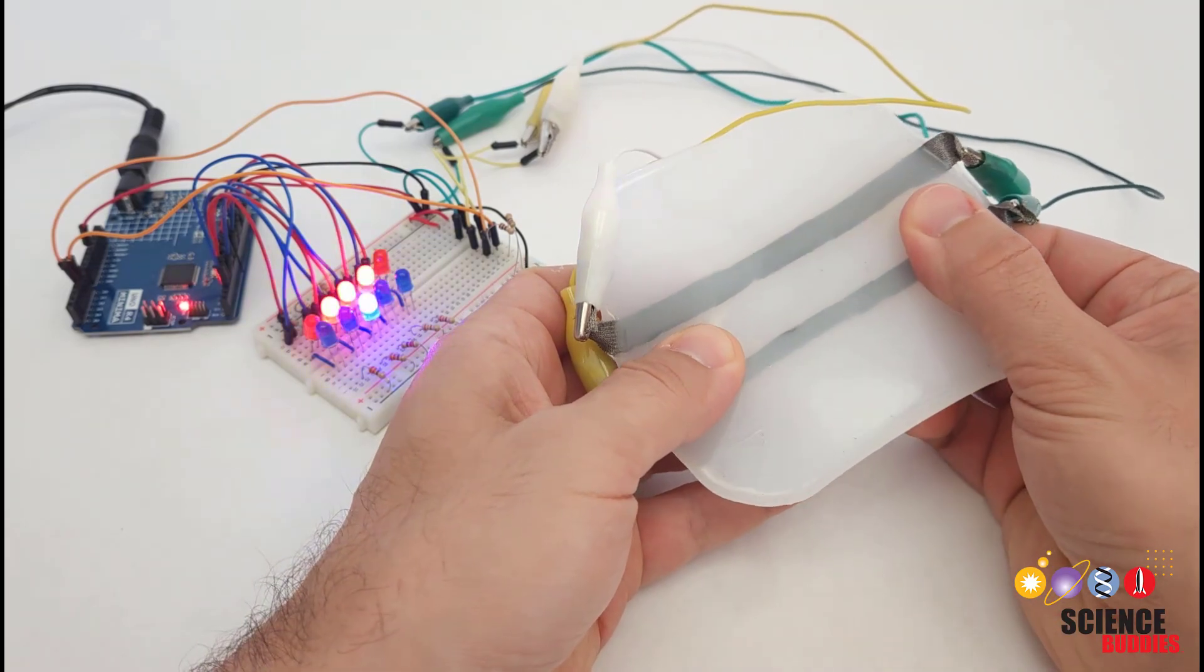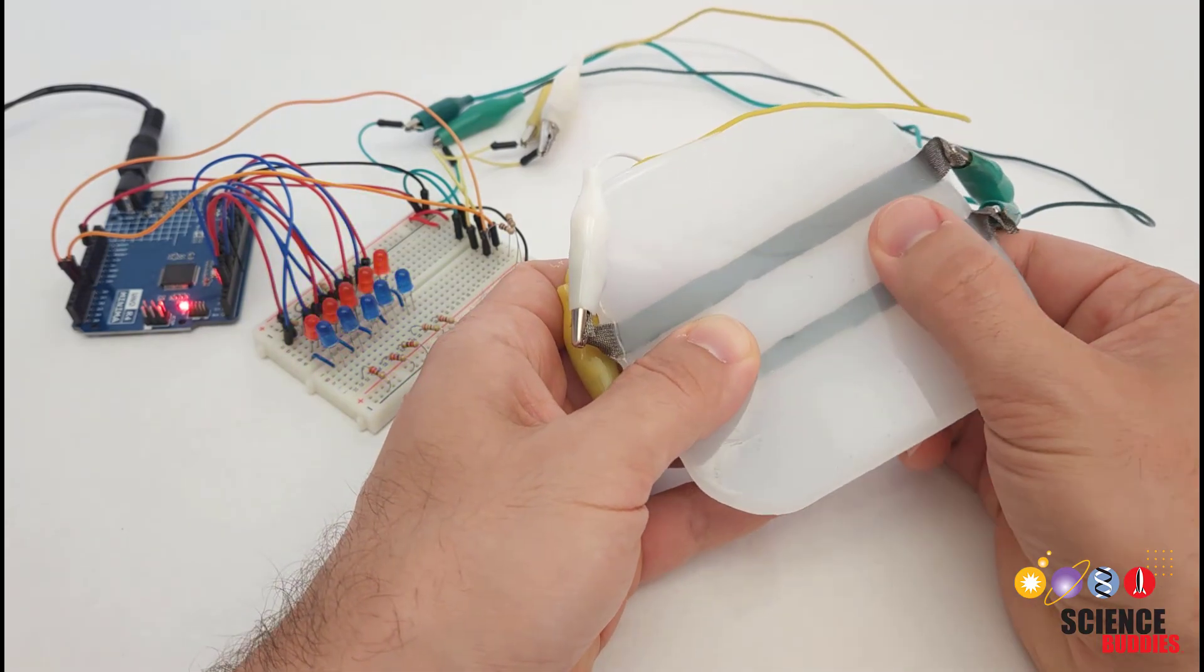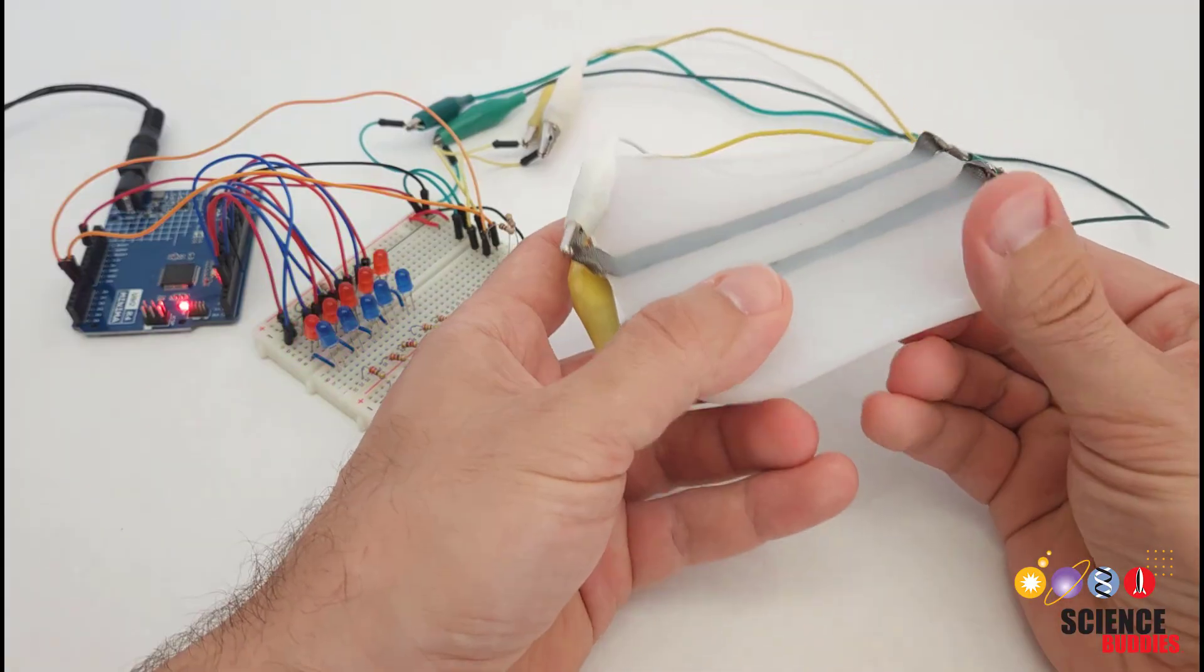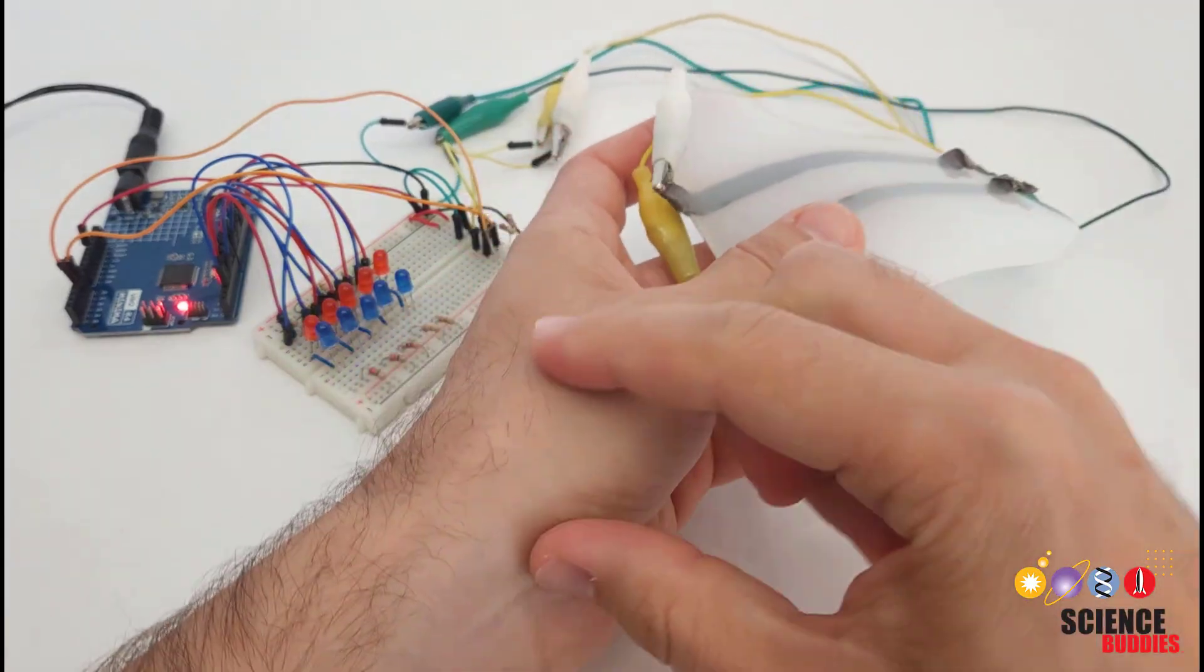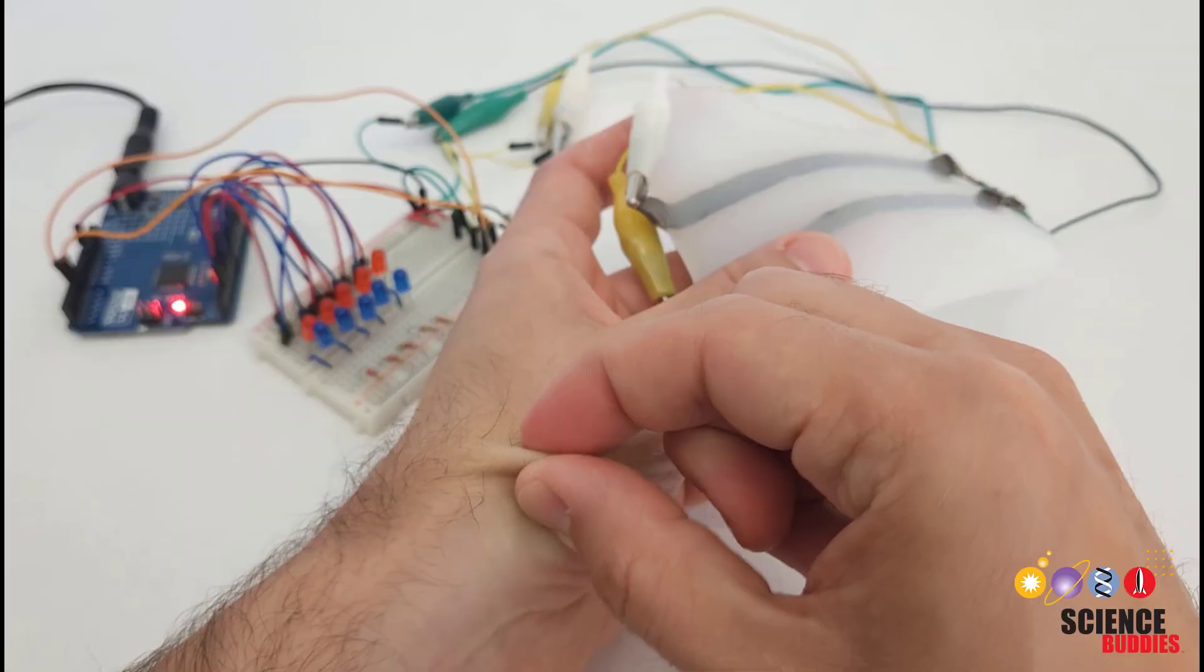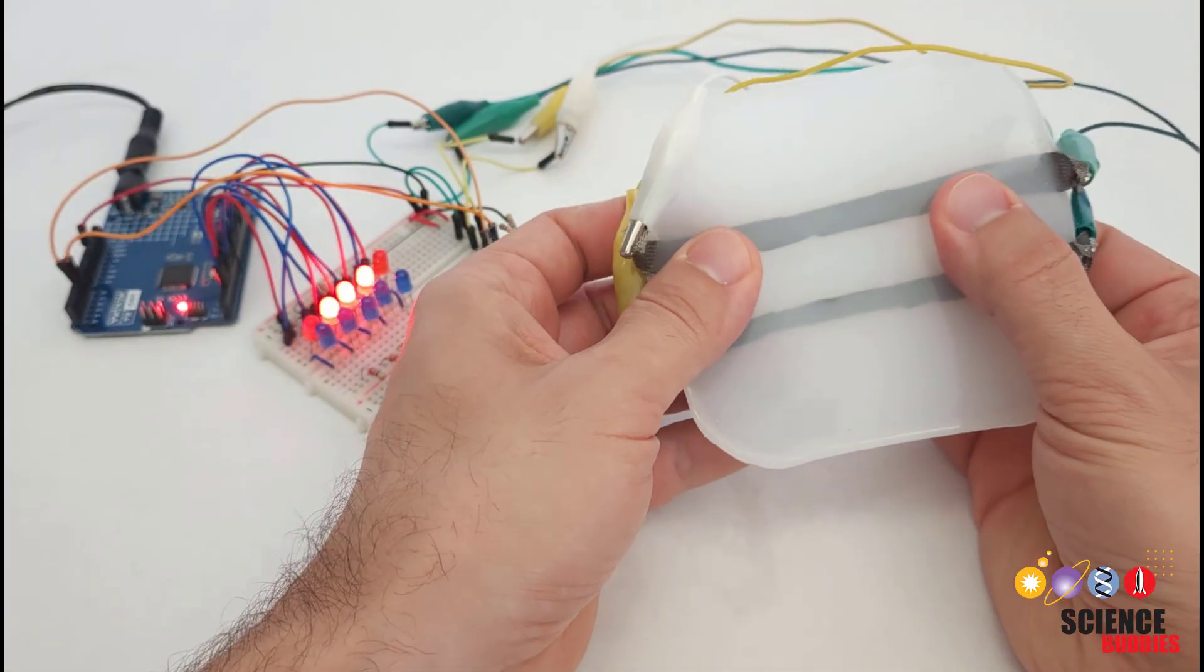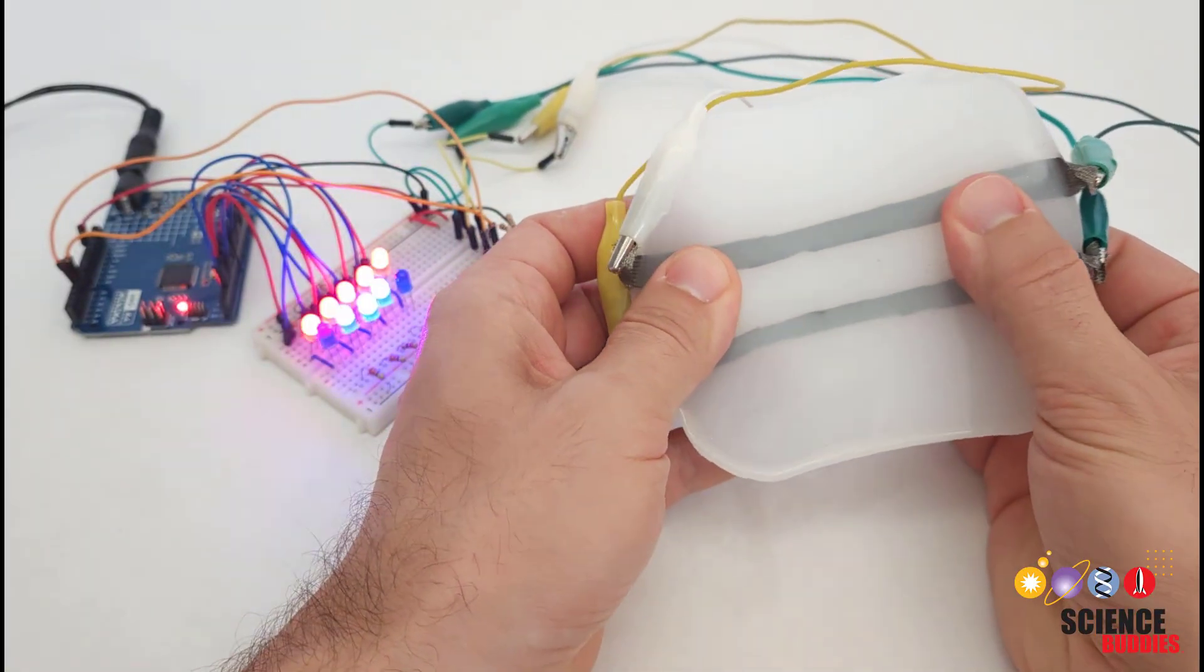In this video, I'll show you how to make an artificial robotic skin that can detect when it's stretched. The skin is made from silicone rubber that's stretchy and flexible just like human skin, but inside it has strips of embedded conductive fabric.